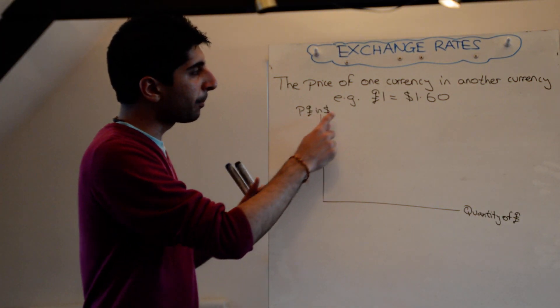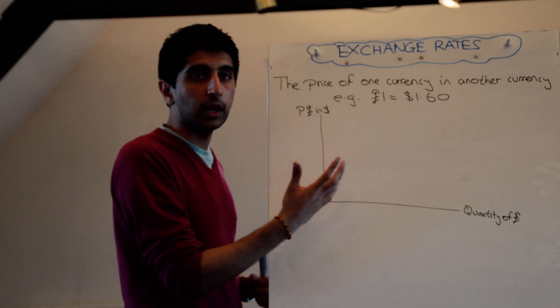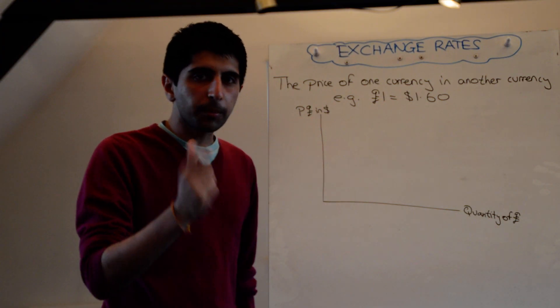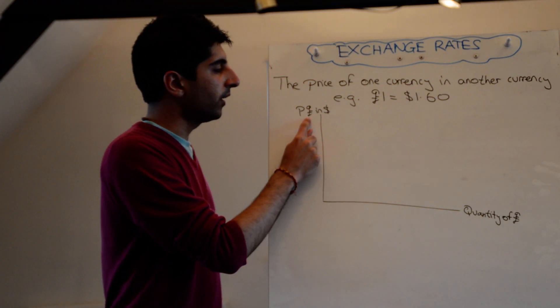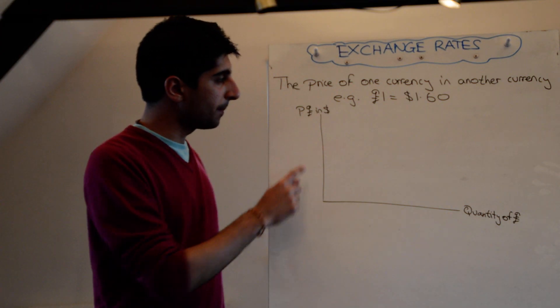So here, we're looking at the price of pounds, aren't we? We're looking at the pound exchange rate against the dollar. On the y-axis, we can't just write price. Specifically, it's the price of the pound in dollars. That's very important.